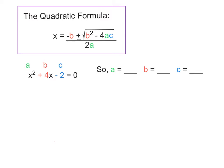There's no number in front of x², which means a is 1. So in this equation, a is 1. Then b is 4, and our c value is negative 2. So we're going to take those three numbers — 1, 4, and negative 2 — and put them where they belong in the formula so we can simplify and evaluate.